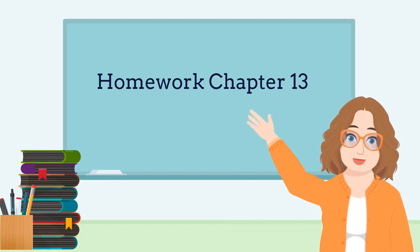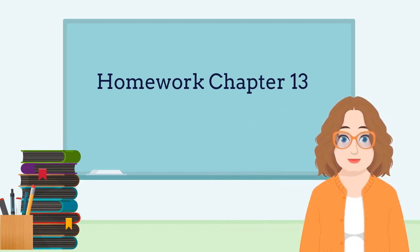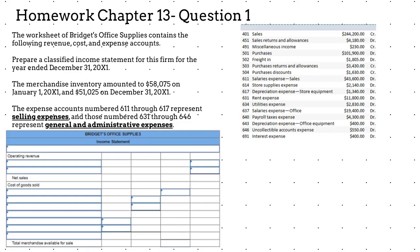Hello. Let's talk about this week's homework. This is question 1. The worksheet for Bridget's Office Supplies contains the following revenue, cost, and expense accounts. Prepare a classified income statement for this firm for the year ended December 31, 2021.